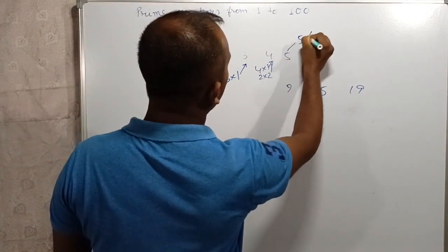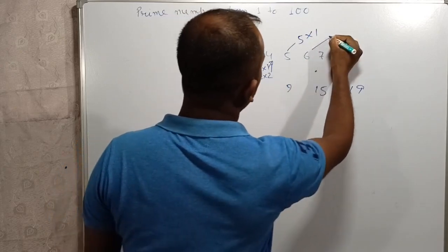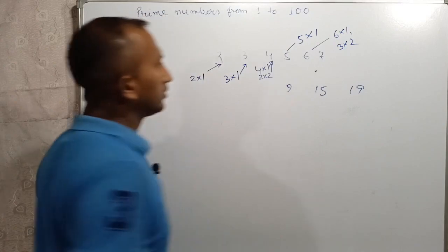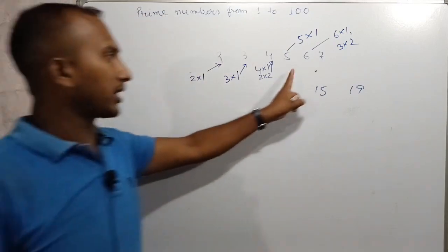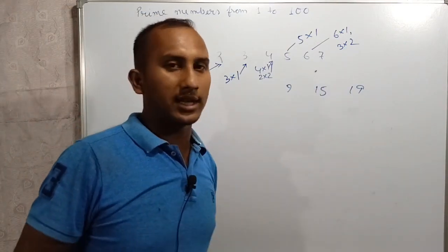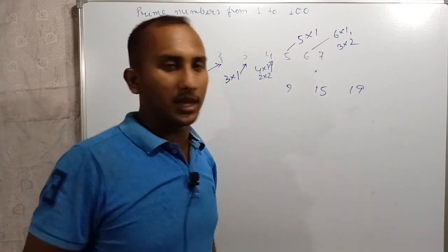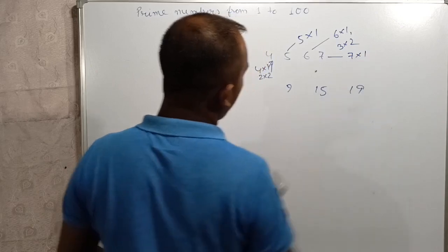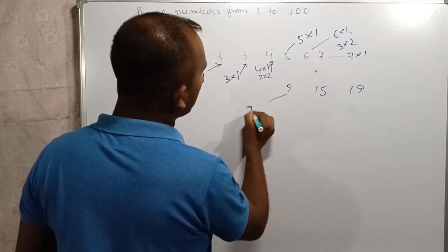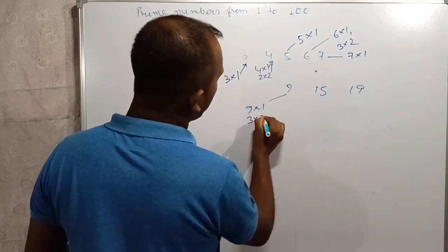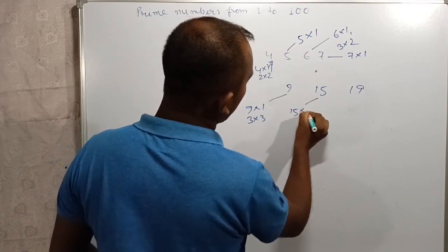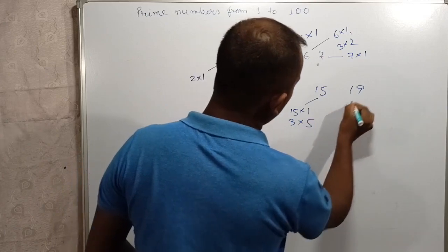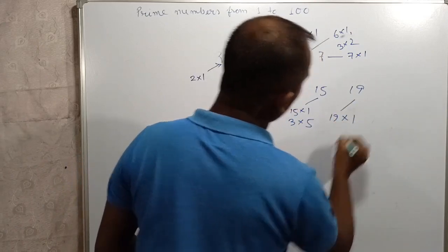5 times 1 — 5 does not change. 6 into 1, 3 into 2, 6 times 2. The number is 6. 7 times 1. 9 times 1, 3 times 3. 15 times 1, 3 times 5. 19 times 1.